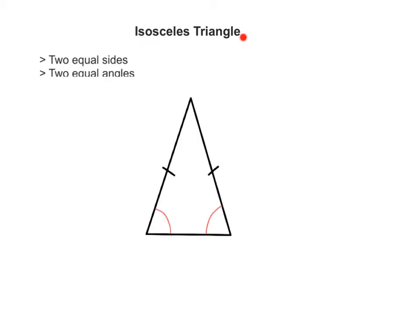An isosceles triangle has two properties: it has two equal sides — these two sides are equal, as implied by the lines drawn here — and it also has two equal angles. These two angles are equal.